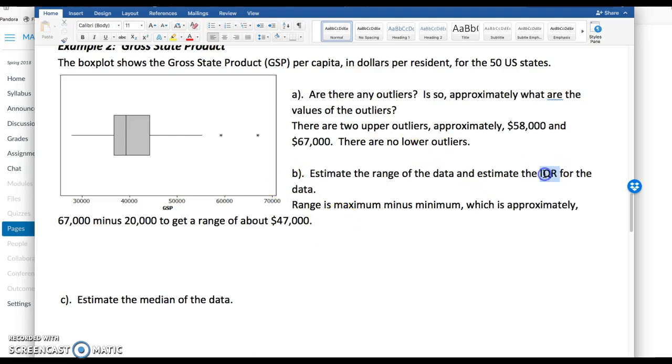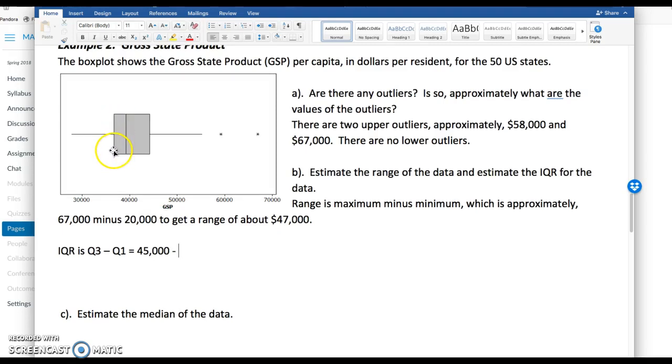Now we want to get the IQR. IQR is Q3 minus Q1, which for this we're going to now look at kind of the fat box in the box plot. This gives you that middle 50%. So Q3 is going to be the upper cutoff of the box. It looks about halfway between 40,000 and 50,000. So I'm going to approximate that Q3 is 45,000. And then we're going to take away Q1, which is going to be the bottom half of the larger box in the middle. And that's maybe 36,000, 37,000. I'll say 37,000 here.